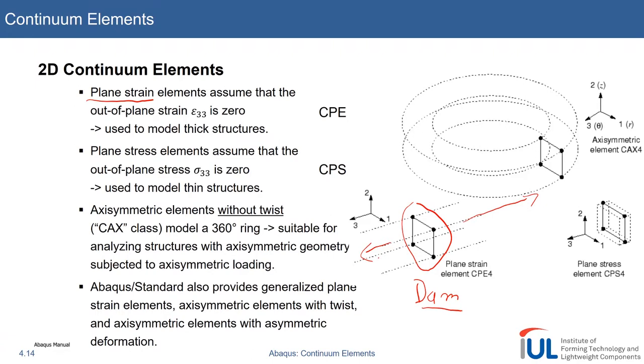The second type is the plane stress elements. You assume that the out-of-plane stress sigma_33 is zero. This is used to model thin structures. However, I would say you can say plus more. I want to give you an example in this case.